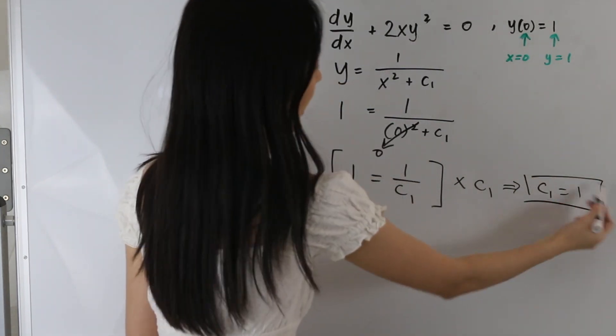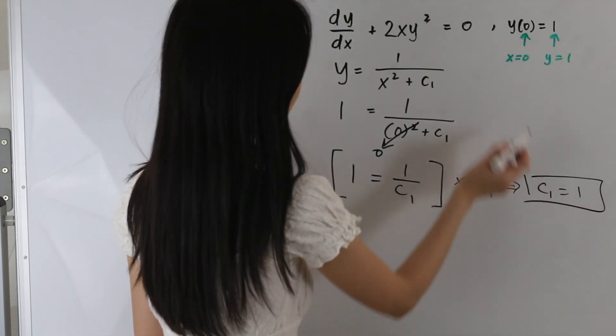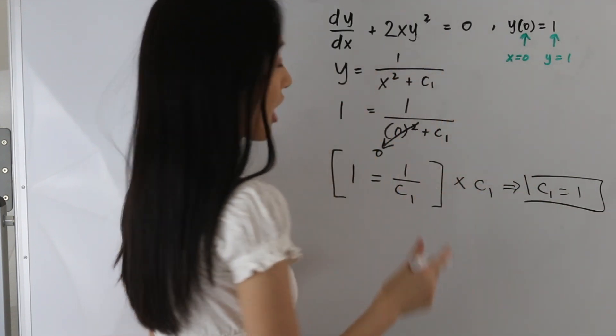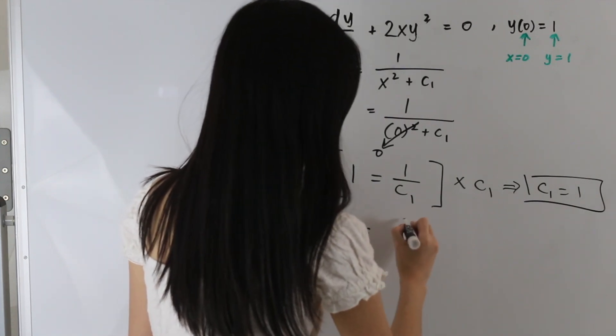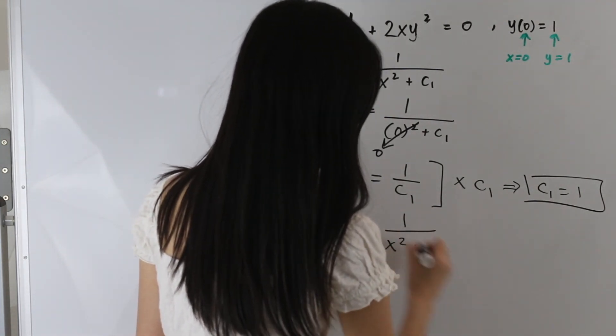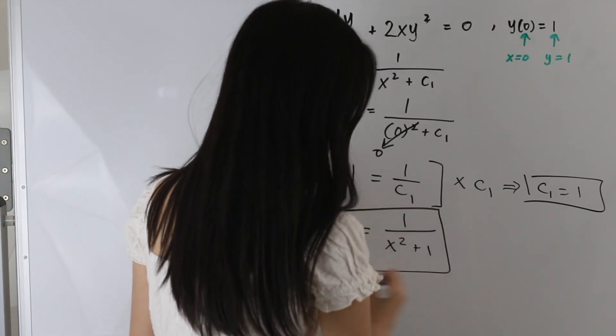So let's go ahead and plug in our constant term into our general solution to get our particular solution. So we get y is equal to 1 over x squared plus 1, and that is our final answer.